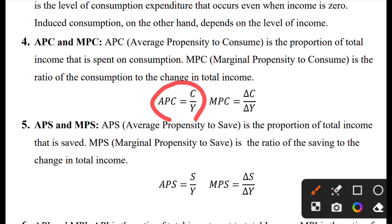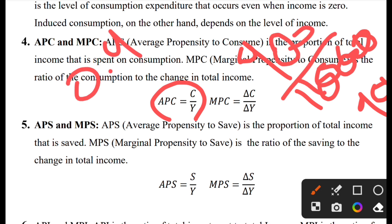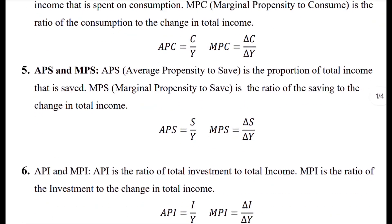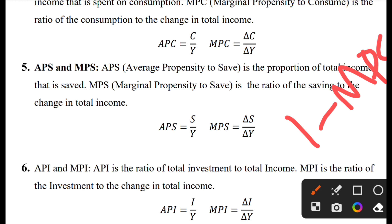Marginal propensity to consume (MPC) is the ratio of change in consumption to the change in total income. MPS — average propensity to save — is the proportion of total income that is saved, that is S divided by Y. MPS is equal to change in S divided by change in Y, the ratio of saving to change in total income. MPC plus MPS equals one, so MPS equals one minus MPC.